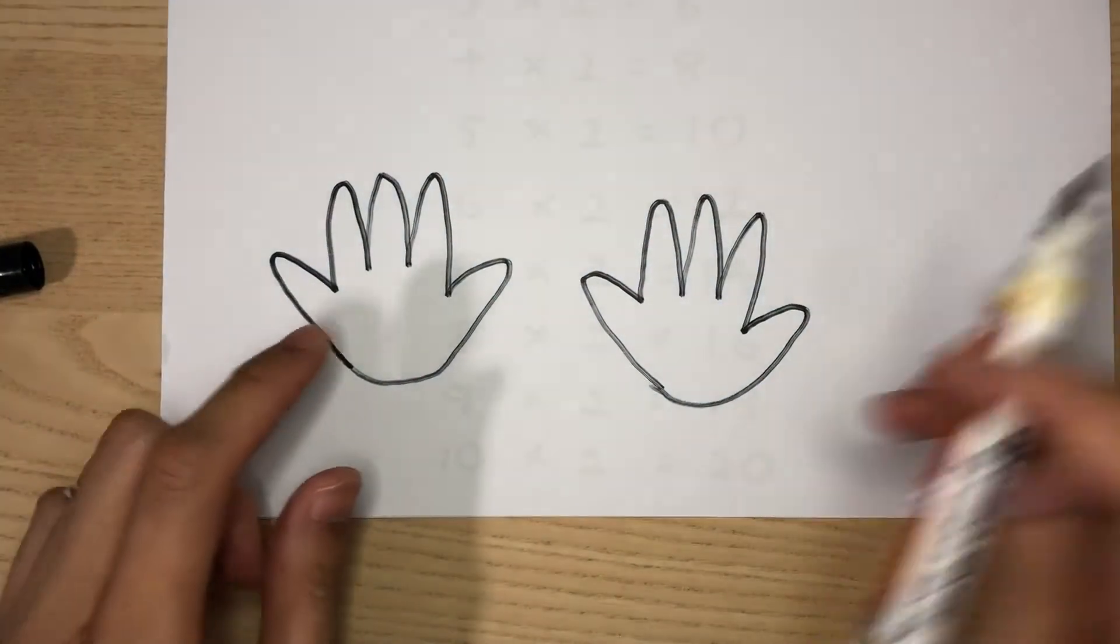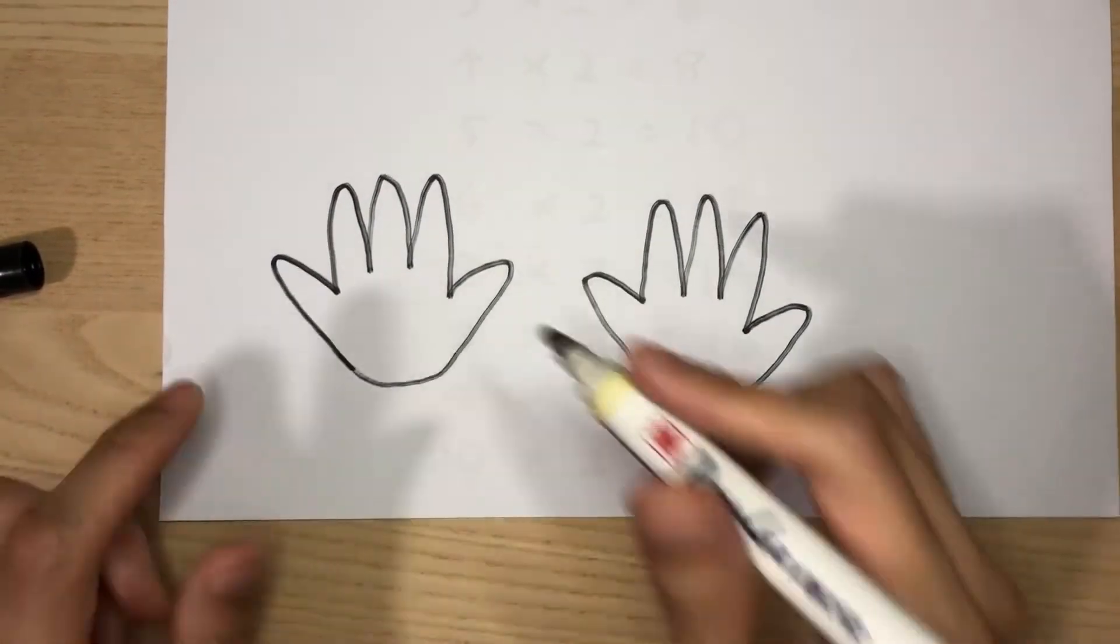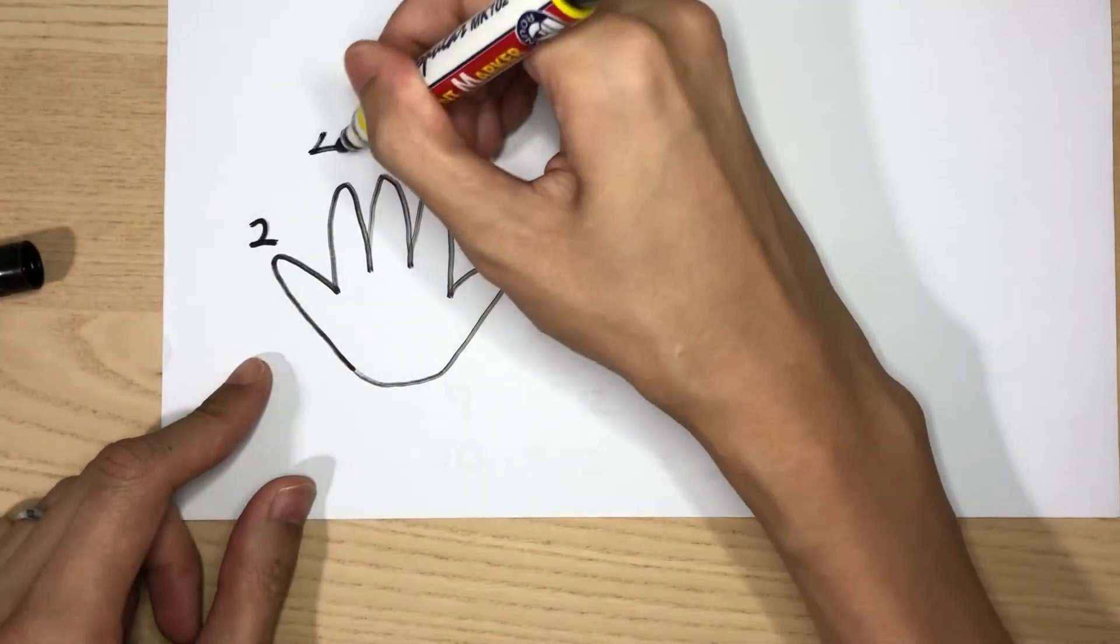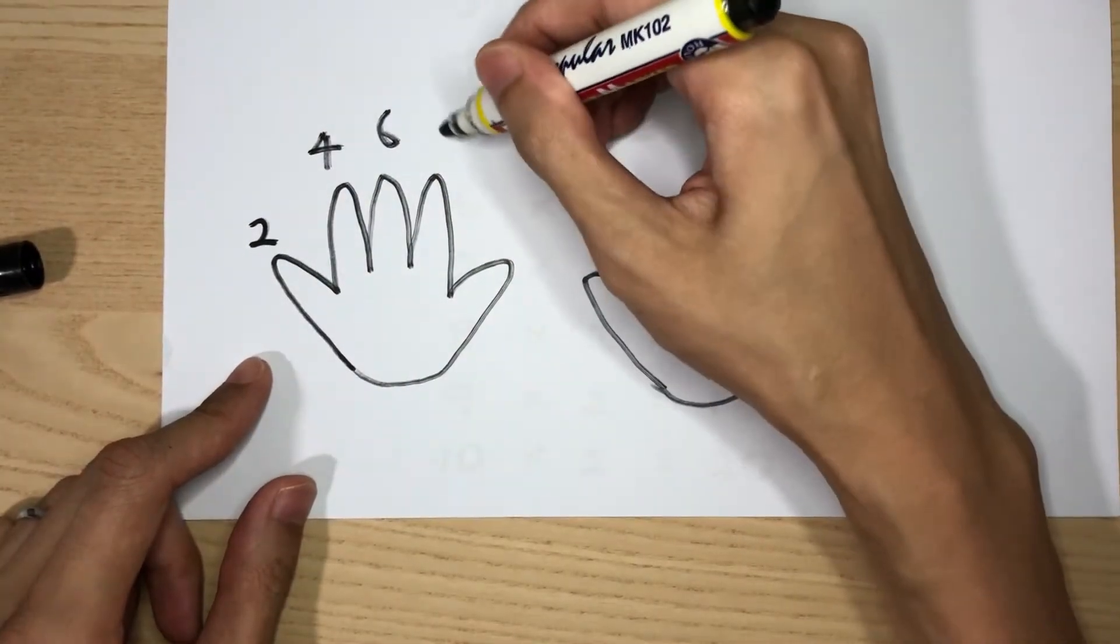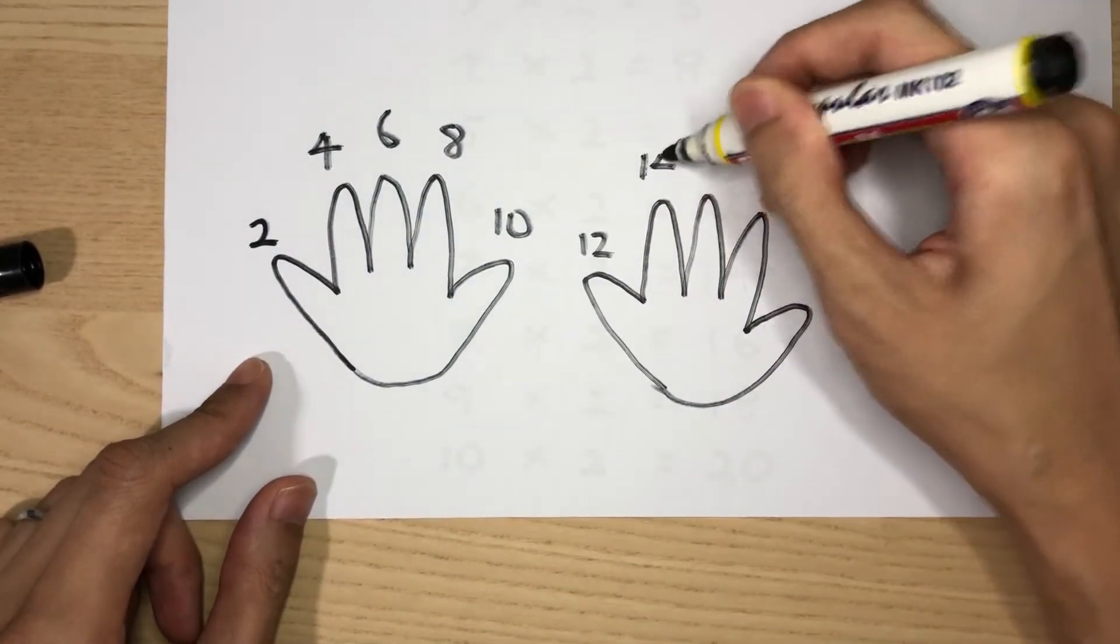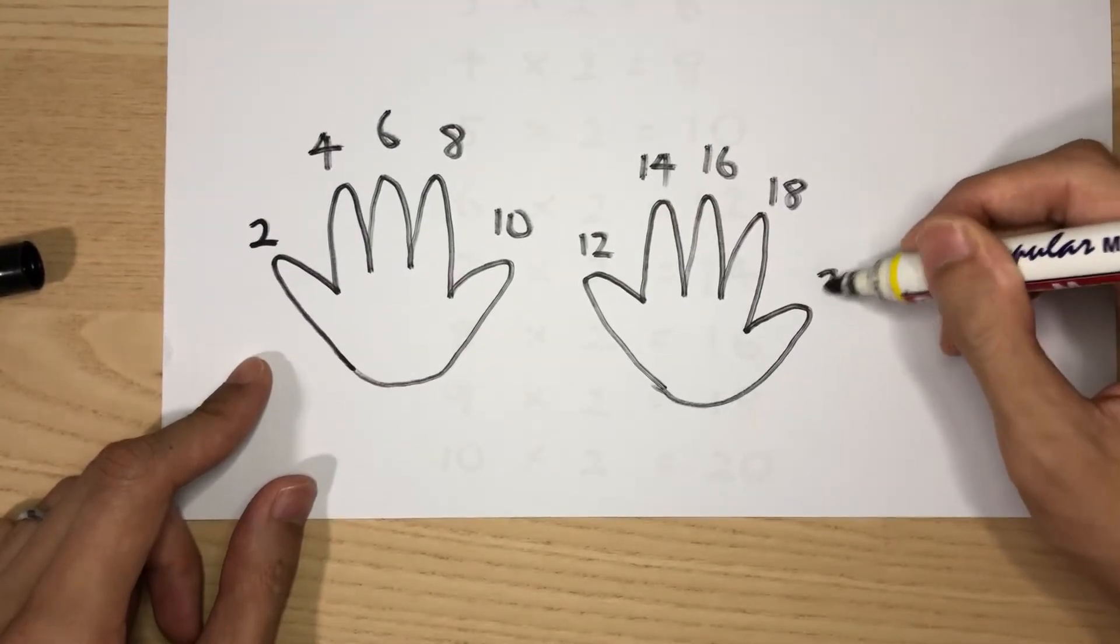We are going to count together. This finger here, your little pinky, will be your two. This will be four, this will be six, eight, ten, twelve, fourteen, sixteen, eighteen, followed by twenty. This is your two times table.